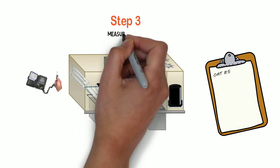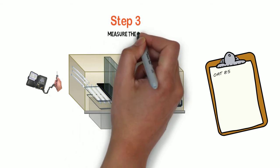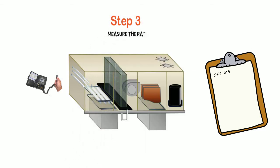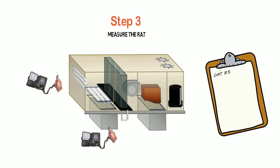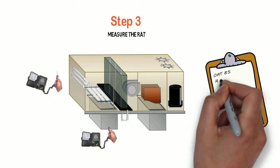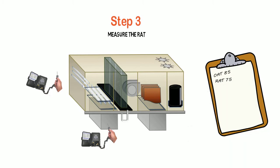Step three: we're going to measure the return air temperature in the return duct, making sure we're getting just the return air temperature and no outside air. In our case, 75 degrees. Write it down.